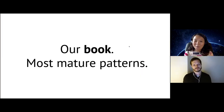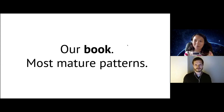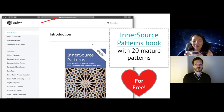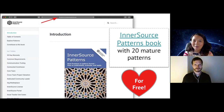We actually have a patterns book. It has the most mature patterns, and all of those patterns have been proven in at least one or more companies. You can find the proven instance from the pattern there. The book is located on the internet — if you go to the URL patterns.innersourcecommons.org, you will be able to get to the book.